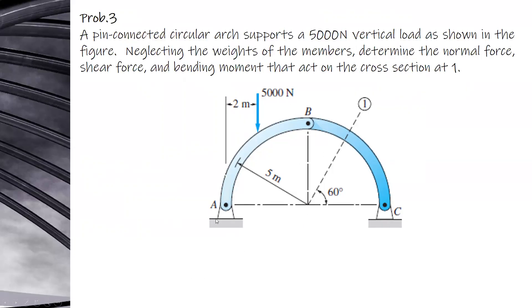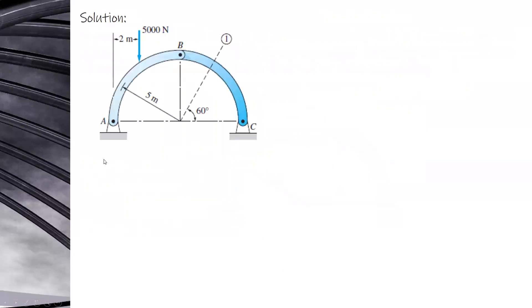Same as with the other problem — first get the reactions before analyzing a point on the arc. There are 2 reactions at A and 2 also at C.